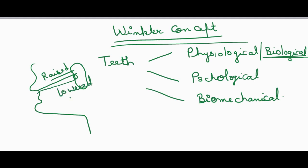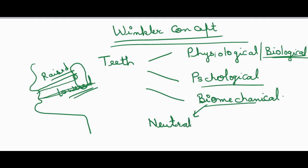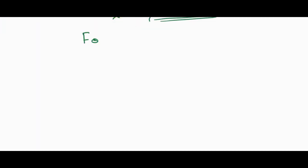The biomechanical perspective considers that teeth placement should balance functional forces within the oral cavity. Instead of setting teeth strictly on the outer or inner side of the ridge, they should be arranged within the neutral zone — the equilibrium between buccal and lingual musculature.